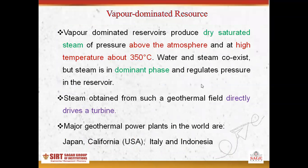The vapor dominated reservoirs produce dry saturated steam at pressure above the atmosphere and at high temperature about 350 degrees centigrade. The water and steam coexist, but steam is in the dominant phase and regulates the pressure in the reservoir.